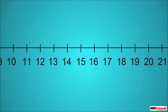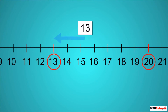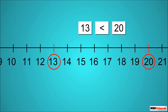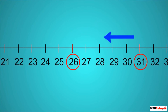Now let's see where these numbers lie on the number line. 13 is towards the left of 20, and 13 is a smaller number between 13 and 20. So we can say that the number which lies on the left of the other number is always smaller between the two.